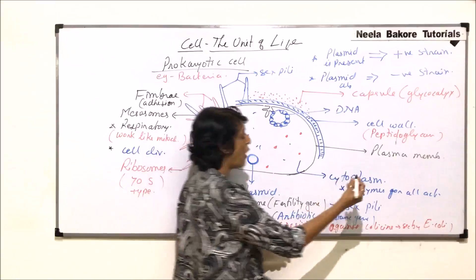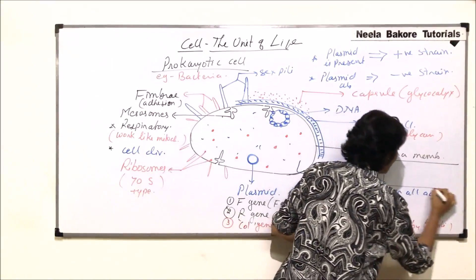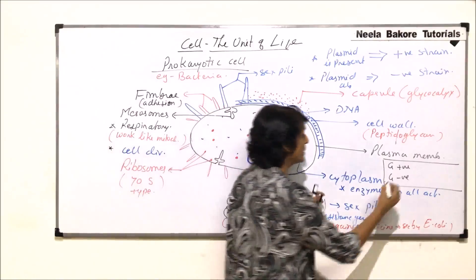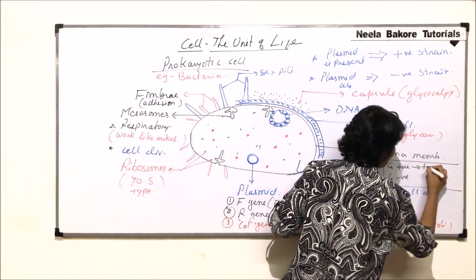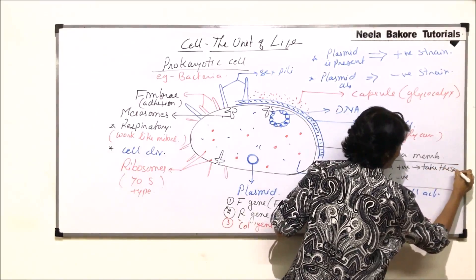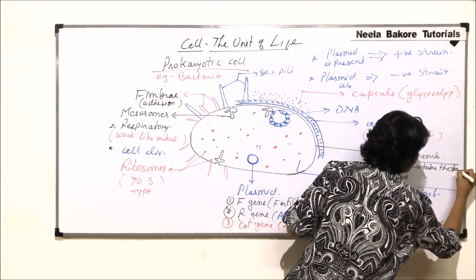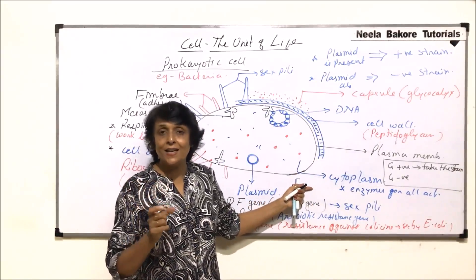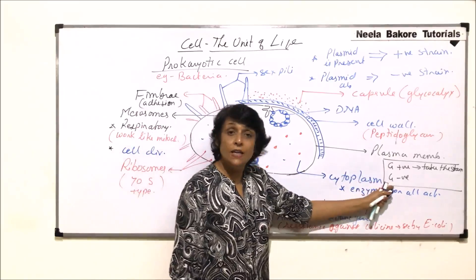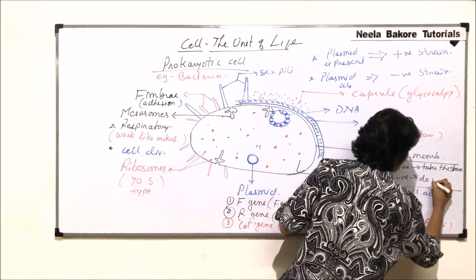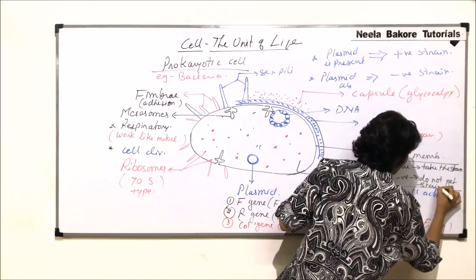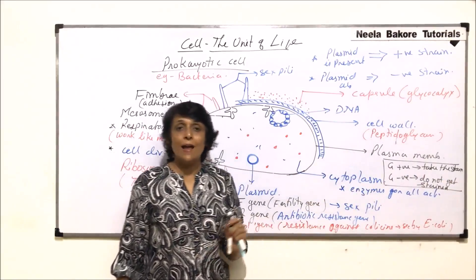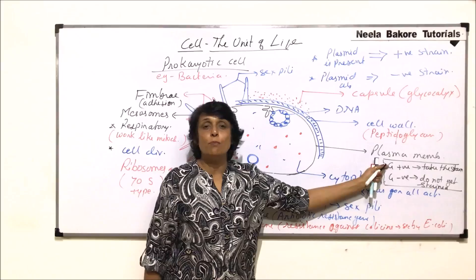Apart from this, when we talk of bacteria or prokaryotic cells, we also talk of gram positive and gram negative cells. Gram positive cells are the ones which take the gram staining — they get stained with a purple color. It is called gram staining because the technique was developed by Gram. If they do not take the stain and do not get stained by this gram staining technique, they would be termed as gram negative.